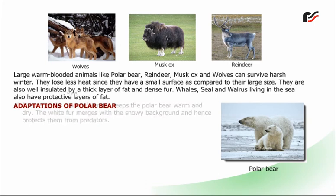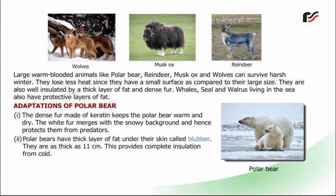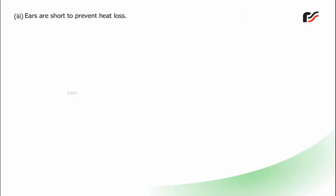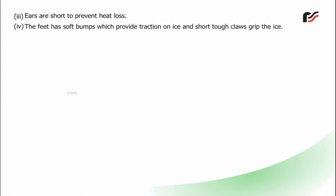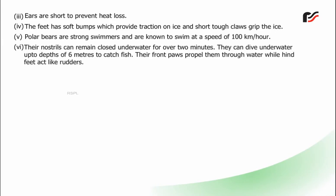Adaptations of the polar bear: The dense fur made of keratin keeps the polar bear warm and dry, and the white fur merges with the snowy background, protecting them from predators. Polar bears have a thick layer of fat under their skin called blubber, up to 11 cm thick, providing complete insulation from cold. Ears are short to prevent heat loss. The feet have soft pads which provide traction on ice, and short tough claws grip the ice. Polar bears are strong swimmers, and their nostrils can remain closed underwater for over 2 minutes. They can dive up to depths of 6 metres to catch fish, with front paws propelling them through water while hind feet act like rudders.